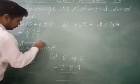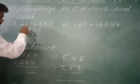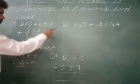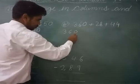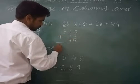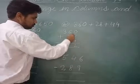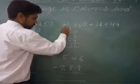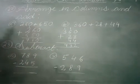0 plus 0 is 0. 6 plus 5 is 11 — write 1, carry 1. 6 plus 2 is 8, plus 1 is 9. So the answer is 910. Similarly, arrange 360 plus 82 plus 44 from the right side. 8 plus 4 is 12 — write 2, carry 1. 6 plus 2 is 8, plus 4 is 12, plus 1 is 13 — write 3, carry 1. Then 4, giving 432.